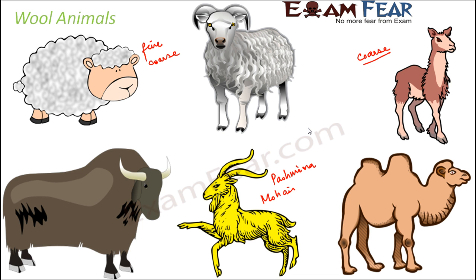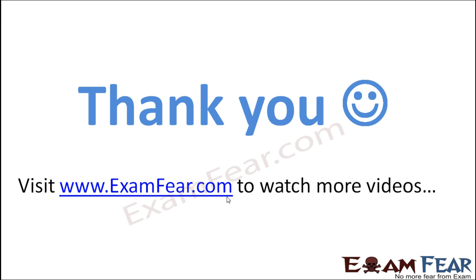Yaks are another wool animal used to produce rough and coarse wool. These are the most common wool animals, and all of them produce different types of wool. In fact, the same type of animal can have different varieties — some goats produce pashmina wool, some other goats produce other types. Different animals produce different types of wool, and depending upon the type obtained, they are used for different purposes.